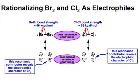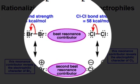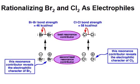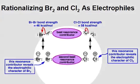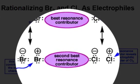Examples of electrophiles that contain lone pairs of electrons include bromine and chlorine, and their electrophilic character is revealed both through their weak bond strength and by drawing their second-best resonance contributor. If we drew a resonance contributor for either the bromine or chlorine molecules, we can see that a positive electrophilic character resides on one of these atoms in each case.